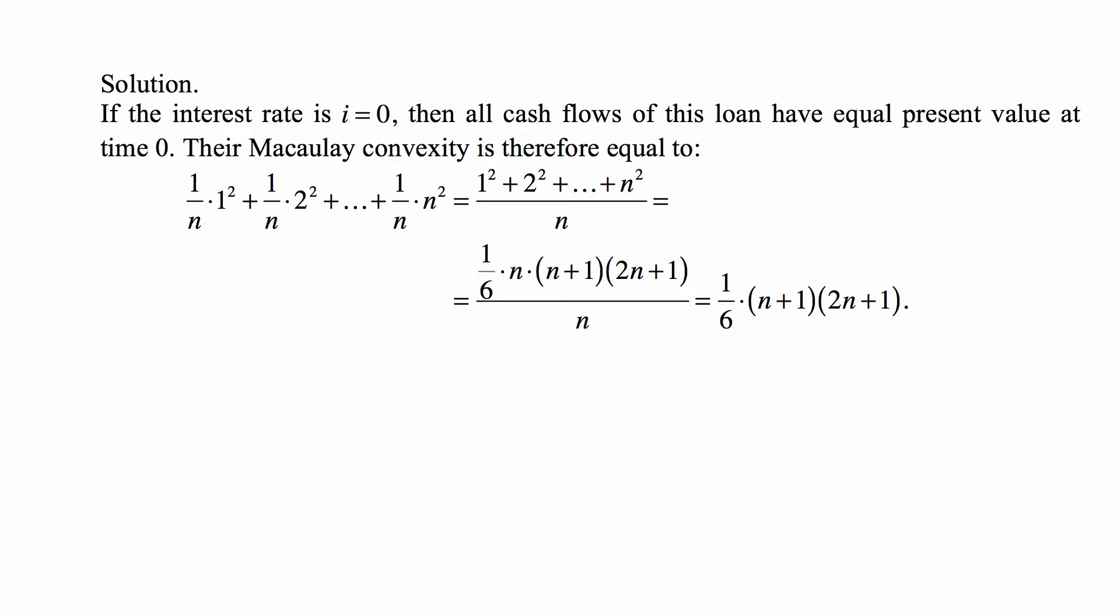If the interest rate is zero, then all cash flows of this loan have equal present value at time zero. And for simplicity we can just assume that they're all equal to one. And the total present value of all payments in this loan is n.